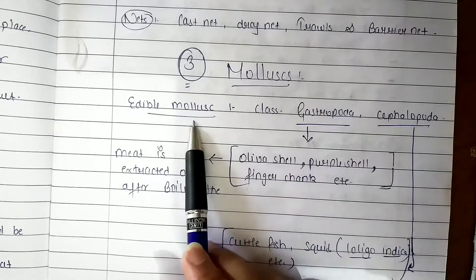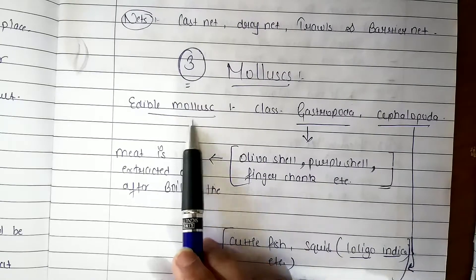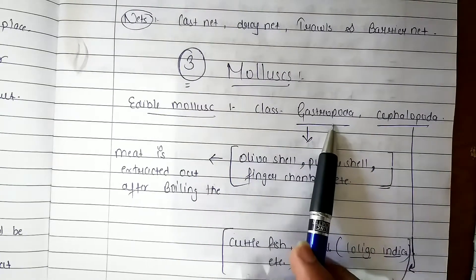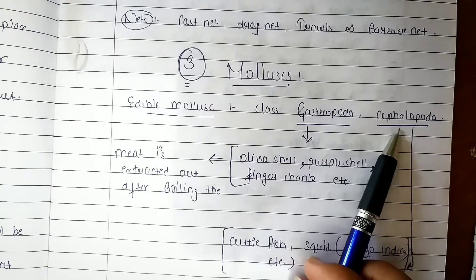Mollusc is called edible molluscs. Edible molluscs are in three classes: Class Gastropoda, Class Cephalopoda, and Class Bivalvia.